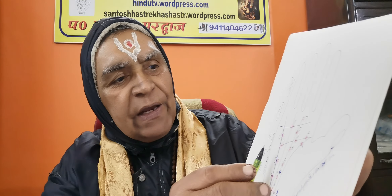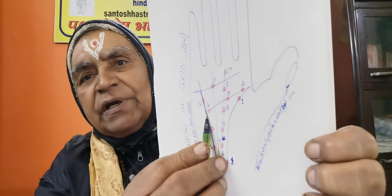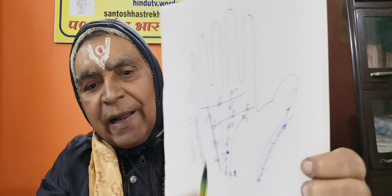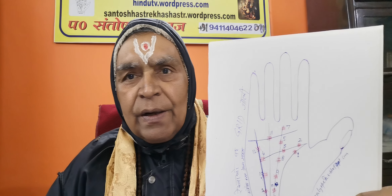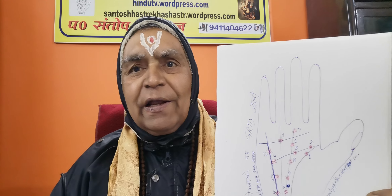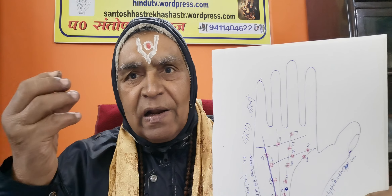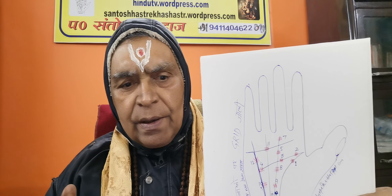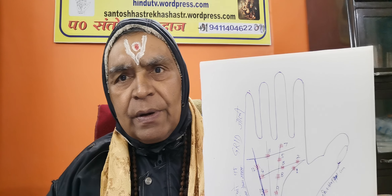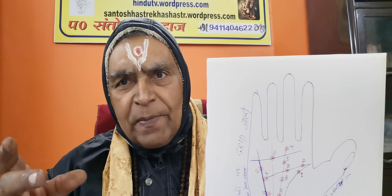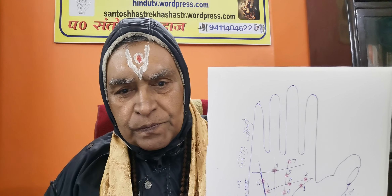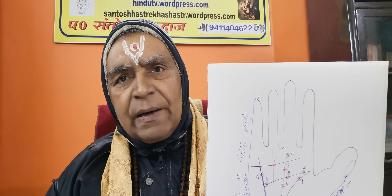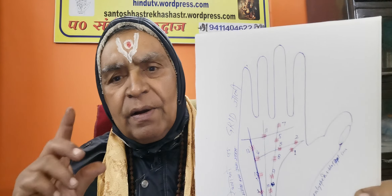Number four: this sign is found at the termination of the line of head. This sign explains the mental status of a person — he is mentally disturbed. It is a preliminary condition of madness. The person may have a weakness and a weak brain.